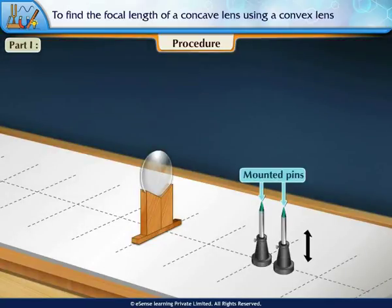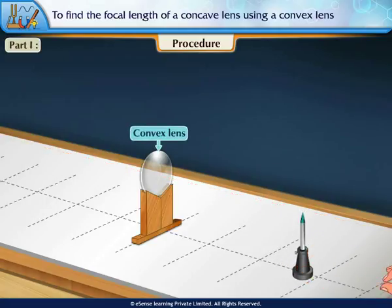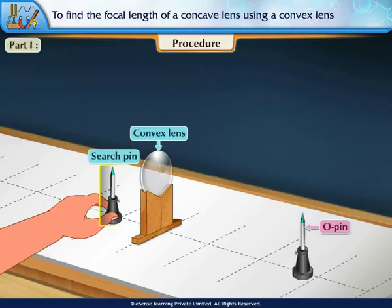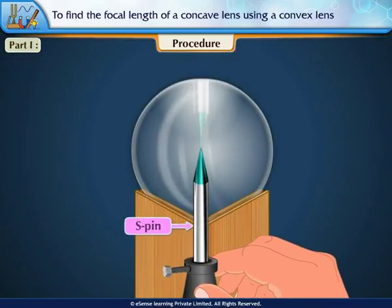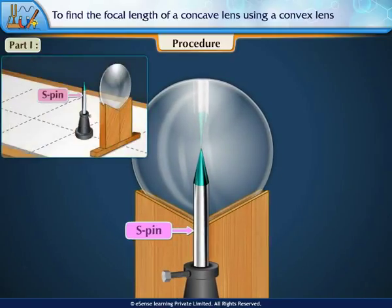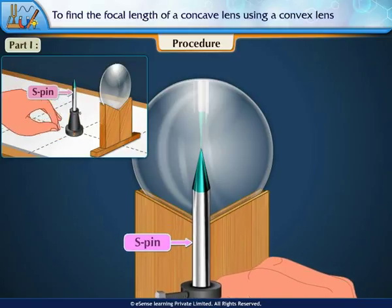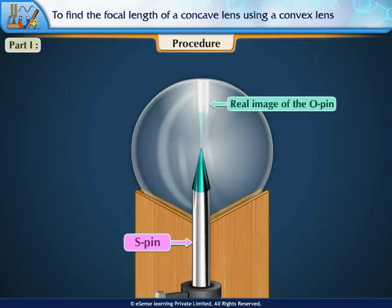Take two mounted pins having heights approximately up to the principal axis of the lens. Place one of the pins — call it the O-pin — in front of the convex lens. Place the second pin, the search pin or S-pin, on the other side of the lens and close to it. Looking along the principal axis from the side of the S-pin, slowly move the S-pin away from the lens until there is no parallax between the S-pin and the real image of the O-pin.